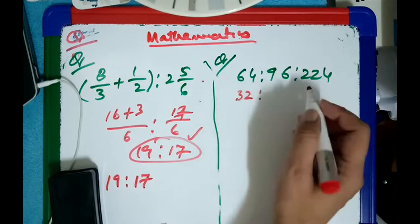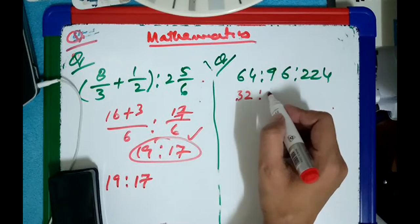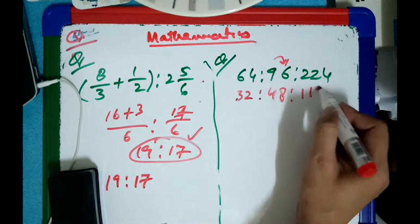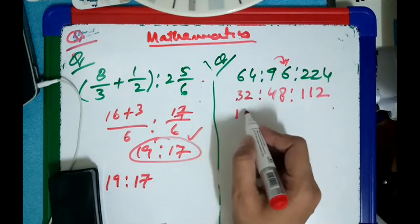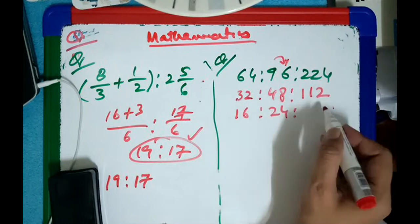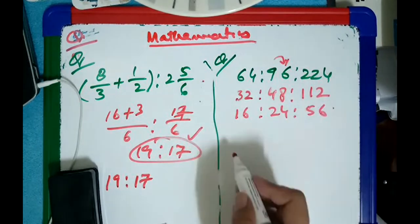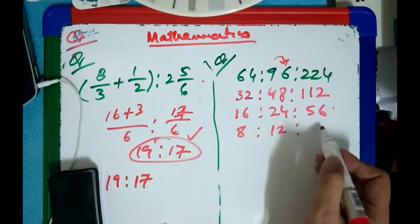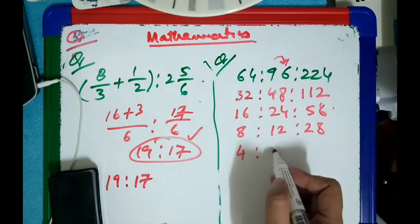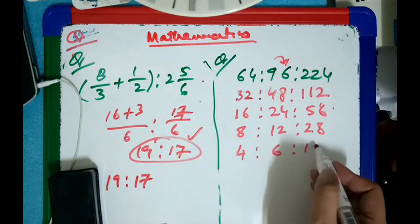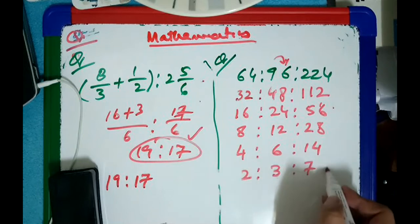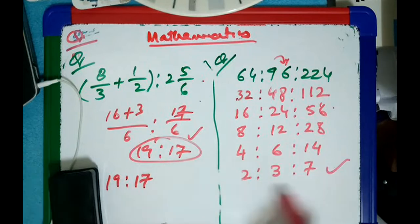Dividing by 2: 64÷2=32, 96÷2=48, 24÷2=12. Divide by 2 again: 32÷2=16, 48÷2=24, 12÷2=6. Divide by 2 again: 16÷2=8, 24÷2=12, 6÷2=3. Still divide by 2: 8÷2=4, 12÷2=6. Then divide again: 4÷2=2, 6÷2=3... final answer: 2 ratio 3 ratio... and 2 ratio 7. This is the simplest form of the three ratios.